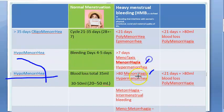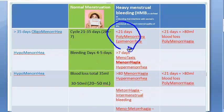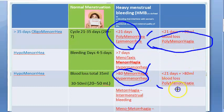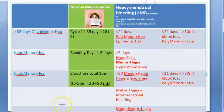Menorrhagia applies if bleeding is greater than 7 days or greater than 80 ml blood loss — also called hypermenorrhagia. If the cycle is less than 21 days and blood loss is greater than 80 ml, that combines polymenorrhea and menorrhagia to give polymenorrhagia.